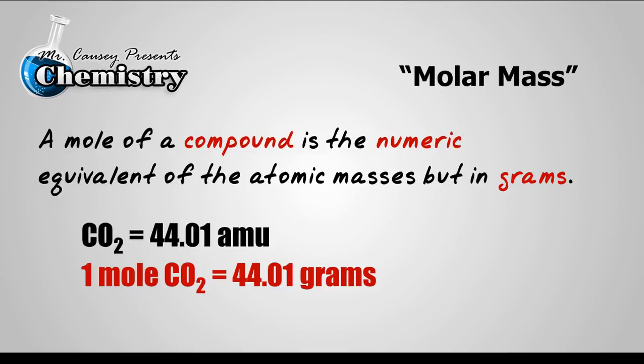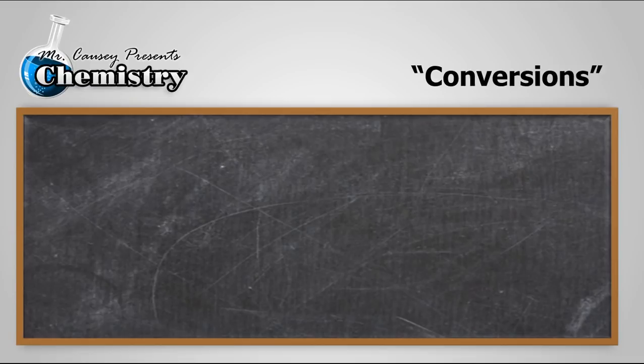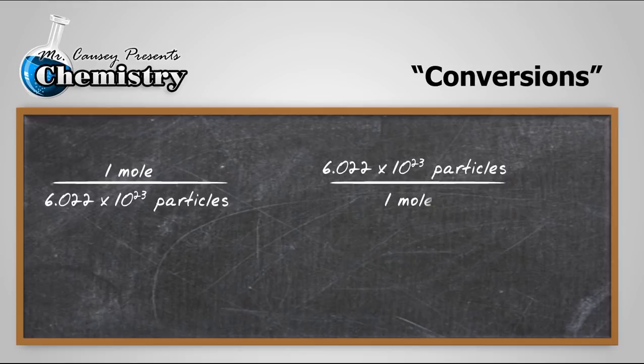All right, let's look at some conversions. It's not important for you to understand the history as much as it is that you understand how a mole is used. And one mole is 6.02 times 10 to the 23 particles. And 6.022 times 10 to the 23 particles is one mole. And particles can be atoms. It can be ions. It can be molecules. It can be formula units. But these conversions are used to go from moles to particles or particles to moles.